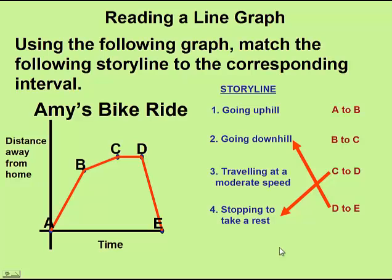Where would she be going uphill? Where would she be traveling at the slowest speed? The section B to C — time is going by, but distance is increasing at a slower rate than the other sections. That leaves us with A to B, where she is traveling at moderate speed. So by looking at a line graph, we can determine a lot about how this bike ride went.